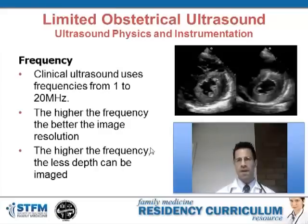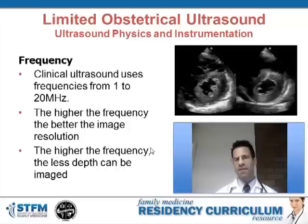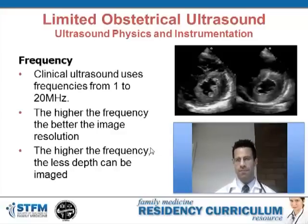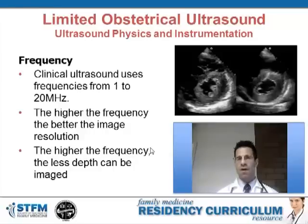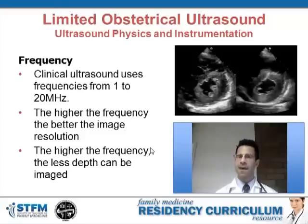Clinical ultrasound uses a variety of frequencies to create images. The range is typically between 1 and 20 megahertz, with the most common range being between 2 and 10 megahertz. The higher the frequency of the probe, the greater the resolution of the image created. However, the trade-off is that higher frequency probes have less depth penetration into the tissue.